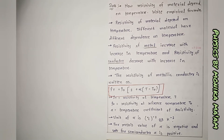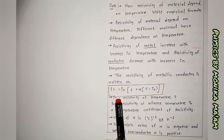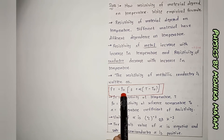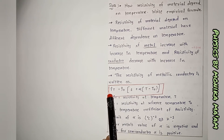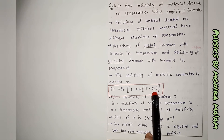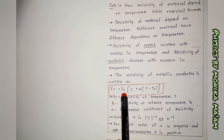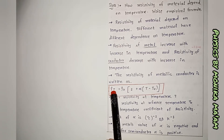When solving numericals, remember the formula: ρT = ρ0 [1 + α(T − T0)]. Here ρ0 is the initial temperature's resistivity, ρT is the final temperature's resistivity. The formula will be clearer when we go through numerical examples.